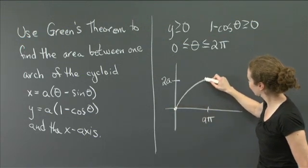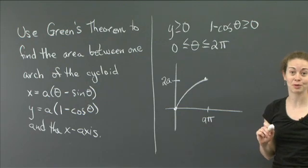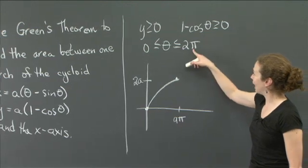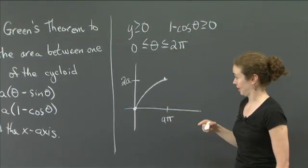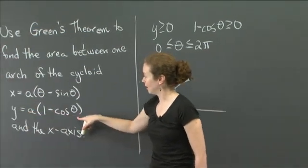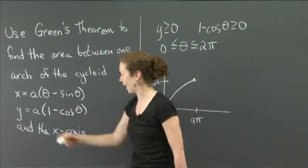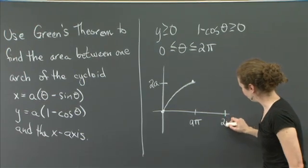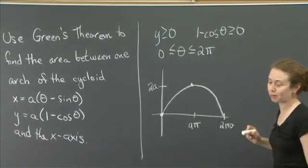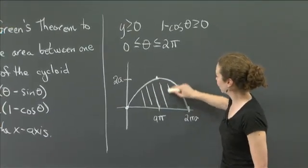So there's a point at (aπ, 2a), and it comes back down the same way. This isn't a perfect drawing; I'm using the minimum points to figure out what's happening. When θ = 2π, 1 - cos θ = 0, so y = 0. And x = 2πa - sin(2π) = 2πa. So I get the point (2πa, 0). That's a good start, and I'm interested in finding the area of this region.